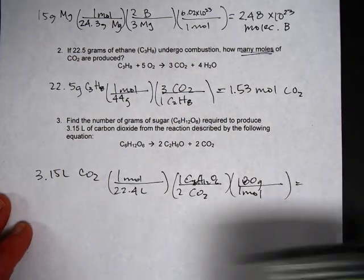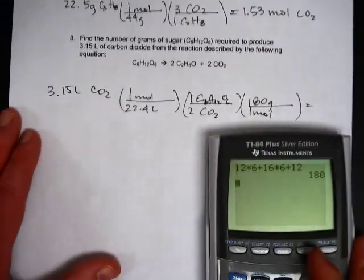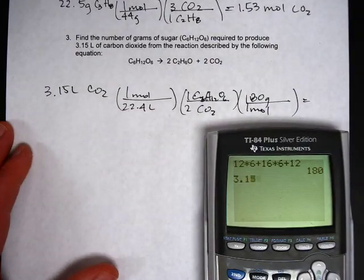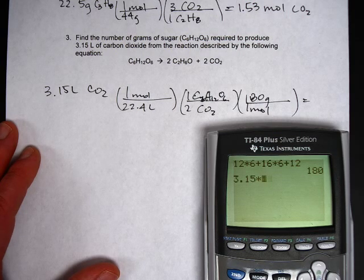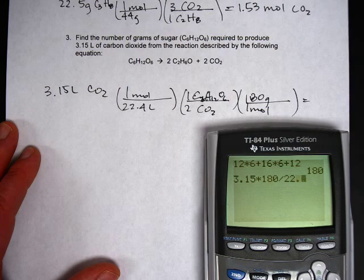And then multiply everything across. So you would take 3.15 times 180 divided by 22.4 divided by 2.